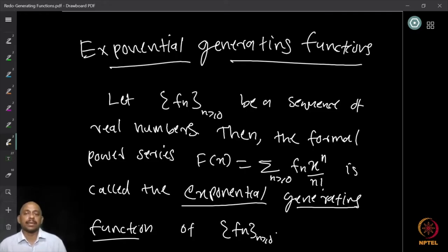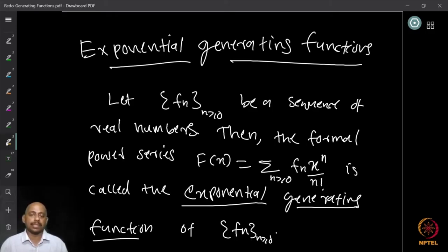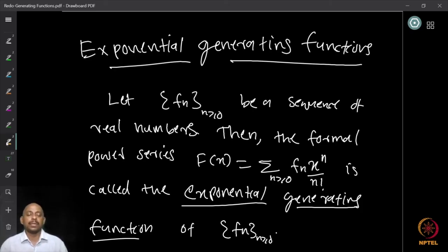Given a sequence fₙ of real numbers, the formal power series F(x) = ∑_{n≥0} fₙ · xⁿ / n! is called the exponential generating function (EGF) of the sequence. We divide by n! to make the coefficients small and improve convergence when fₙ grows fast.